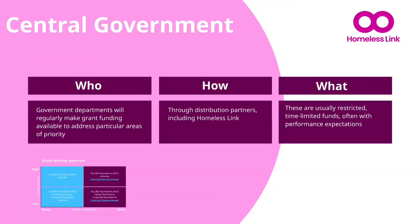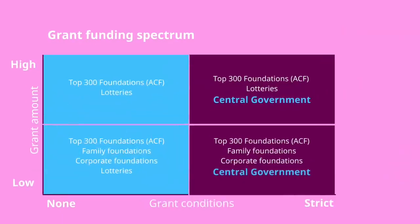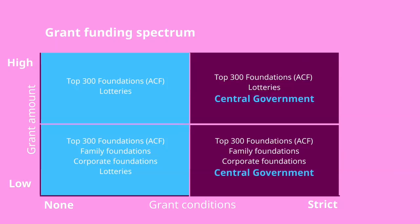Government departments will regularly make grant funding available to address particular areas of priority. These funds are usually accessed through distribution partners who have the right reach with applicants — organisations like Homeless Link. These funds are usually restricted, time limited, and often with clear monitoring and performance expectations. Central government grants can help to increase capacity and address specific needs locally, but are usually stricter in what they can be spent on and how you deliver against them. They tend to be for smaller amounts but can come with significant time restrictions, which can be risky.